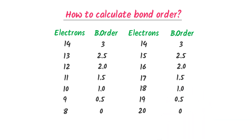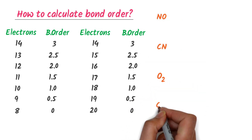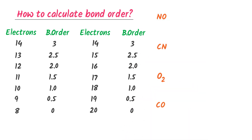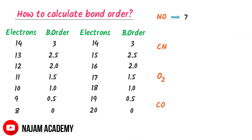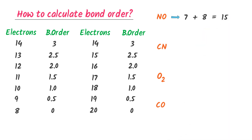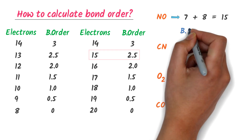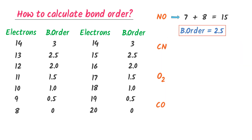Using this trick, we can easily crack any exam question. For example, find the bond order for the following substances. To find the bond order, we have to find the total number of electrons. There are 7 electrons in nitrogen plus 8 electrons in oxygen, so we get 15 electrons. When there are 15 electrons, the bond order is 2.5. So the bond order of this molecule is 2.5.